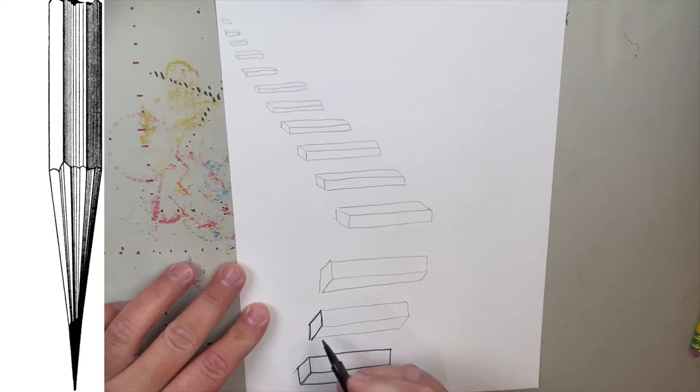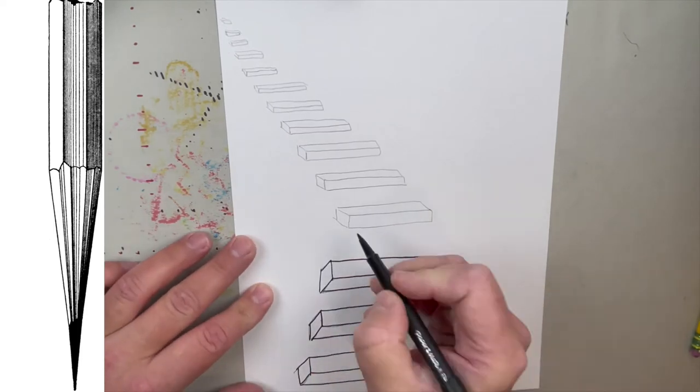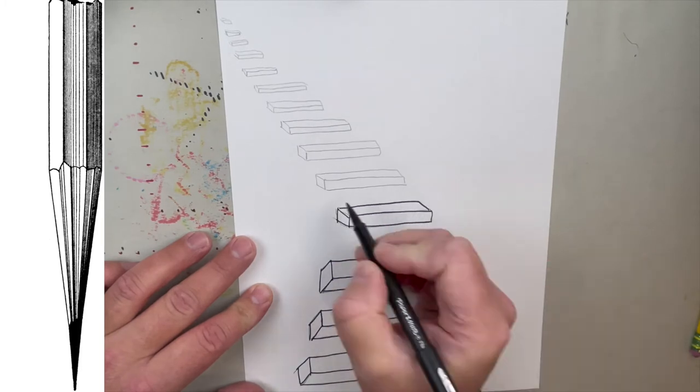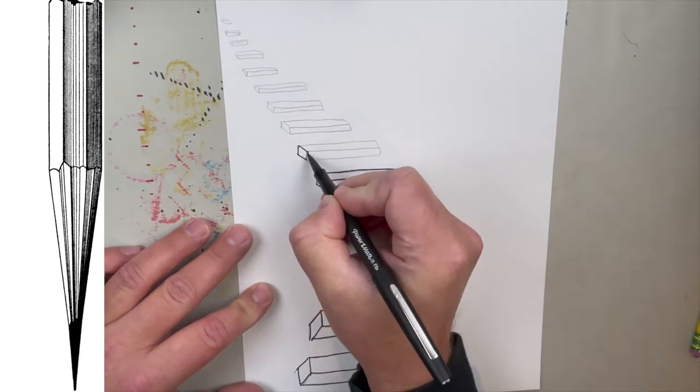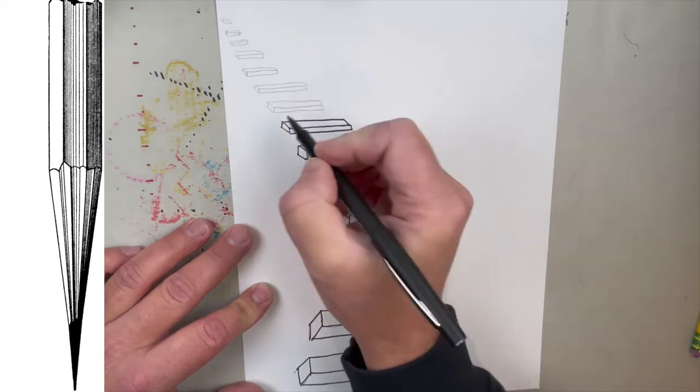Now, once I'm done doing them with pencil and I'm happy, like I always do, I do go over everything with a nice dark permanent marker. That way it could look really nice. So do it first with pencil and then go over everything with a dark marker.